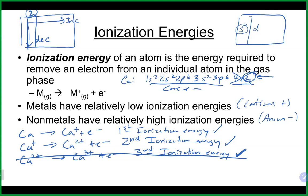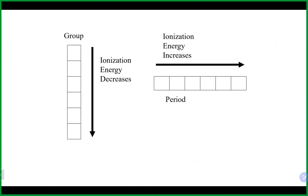If you wrote the electron configuration for a transition metal, the valence electrons would not be the last two written in the configuration, because the S comes before the Ds in that case. Here's the general trend for the first ionization energy: it increases as you go up and to the right, and decreases as you go down.